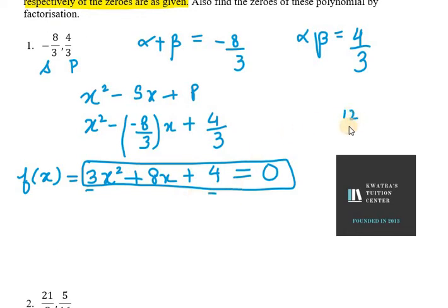We need to make factors such that they make 8x for the middle term splitting. 8x can be made with the help of 6x and 2x because 6 plus 2 is 8x. So 3x square plus 6x plus 2x plus 4.